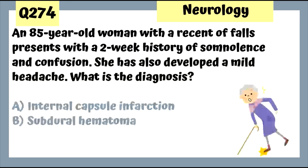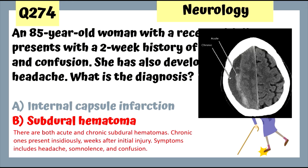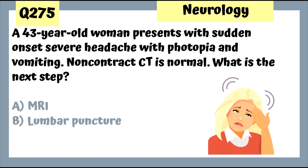Question 274: An 85-year-old woman with a recent history of falls presents with a two-week history of somnolence and confusion and a mild headache. This is a subdural hematoma, seen in the elderly. The chronic form presents insidiously weeks after the initial injury, with symptoms including headache, somnolence, and confusion.